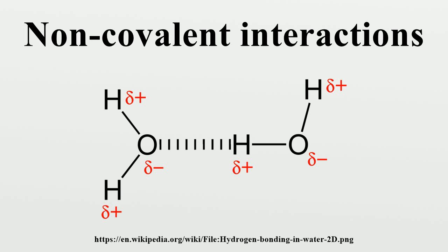Hydrogen bonding: A hydrogen bond is a specific type of dipole-dipole interaction that involves the interaction between a partially positive hydrogen atom and a highly electronegative, partially negative oxygen, nitrogen, sulfur, or fluorine atom. It is technically not a covalent bond, but instead is classified as a very strong dipole-dipole interaction. It is responsible for why water is a liquid at room temperature and not a gas. Most commonly, the strength of hydrogen bonds lies between 0 to 4 kcal per mole, but can sometimes be as strong as 40 kcal per mole.